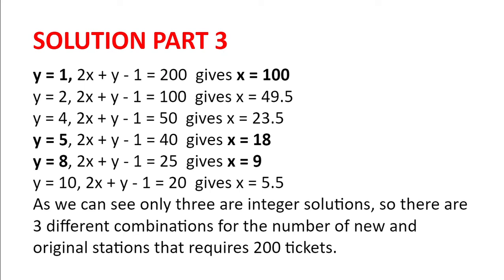Looking at the values for y and x, we can see that only three are integer solutions, which are when y equals 1, 5, or 8. So there are three different combinations for the number of new and original stations that requires 200 tickets.